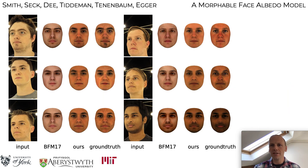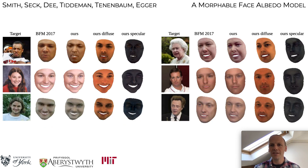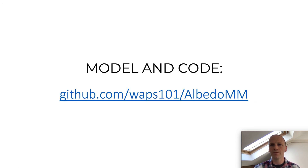We used our captured data to provide ground truth for an albedo estimation benchmark. Using the same fitting pipeline, our model reduces the error in the estimated albedo by nearly 70% compared to using the existing Basel face model. Fitting to in-the-wild images, we can see that our model meaningfully disentangles shading from diffuse and specular albedo. Our model can be used as a plug-in replacement for the Basel face model texture model and can be downloaded along with supporting code at this URL.